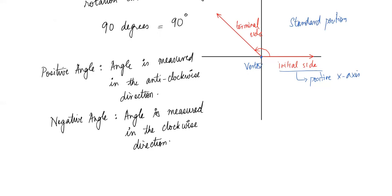Whether the angle is positive or negative, you always start your initial side on the positive x-axis. A positive angle is measured in the anticlockwise direction. The green angle is measured in the clockwise direction, so that would be a negative angle. The blue one would be a positive angle. The direction in which we sweep the angle is what makes it positive or negative.